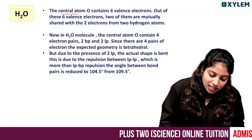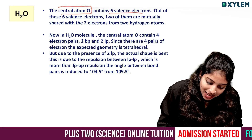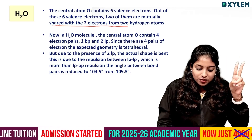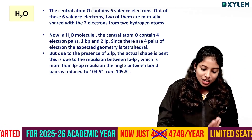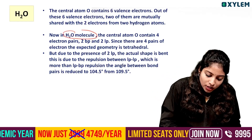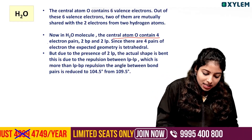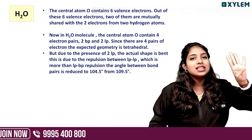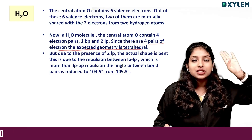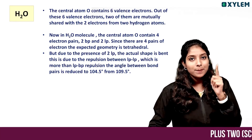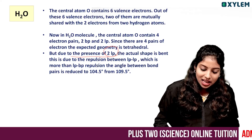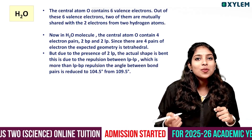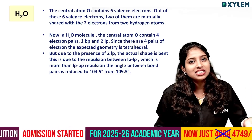In H2O, the central atom oxygen contains six valence electrons. Two of them are mutually shared with two electrons from two hydrogen atoms. The central atom contains four electron pairs — two bond pairs and two lone pairs. The expected geometry is tetrahedral, but due to the presence of two lone pairs, the actual shape is bent.